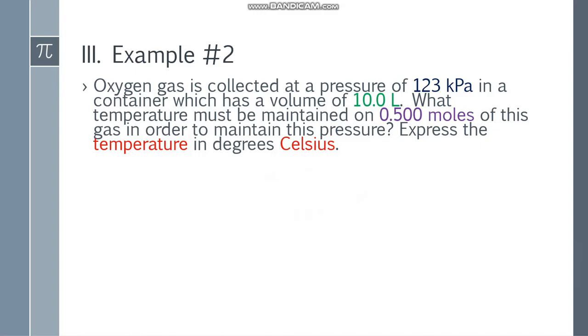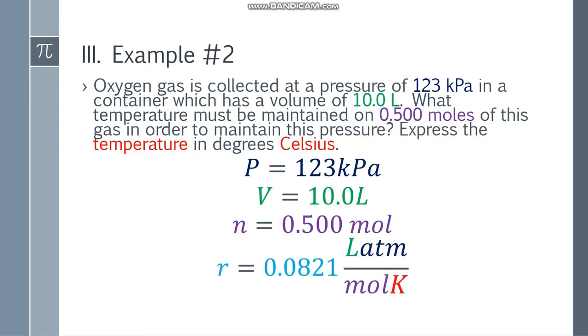Moving on to example number 2. Oxygen gas is collected at a pressure of 123 kPa in a container which has a volume of 10 liters. What temperature must be maintained on 0.500 moles of this gas in order to maintain this pressure? Express the temperature in degrees Celsius. Pressure natin, that will be 123 kPa. Volume, that will be 10 liters. Number of moles, that will be 0.500 moles. R, or yung ideal gas constant, that will be 0.0821. At temperature natin, we don't know, that will be x.